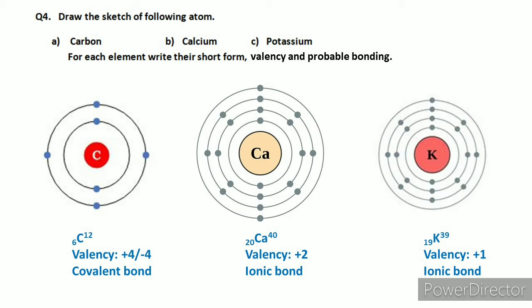We follow a proper pattern for electronic configuration. The K shell has a maximum of two electrons, the L shell has eight electrons, the M shell has eight electrons, and the N shell has eighteen electrons. Carbon has six electrons, so first we fill the first shell with two electrons.